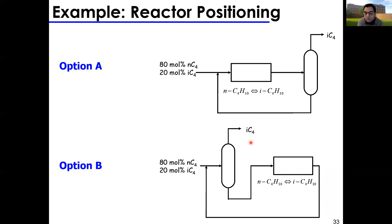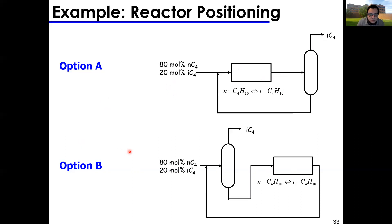So we have two design options. Which is better? This depends on reactor sizing, economics, and process conditions. There isn't a direct heuristic here — the recycling heuristic applies to byproducts in reversible reactions, but isobutane is the main product, not a byproduct. So this decision comes down to an economic judgment call based on your design tree.